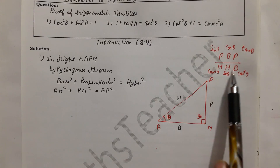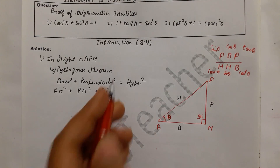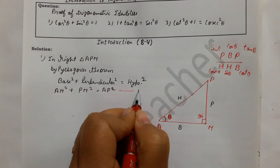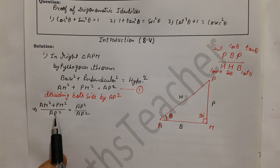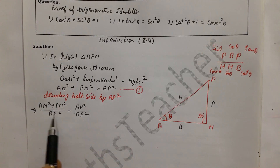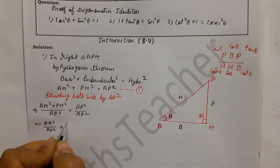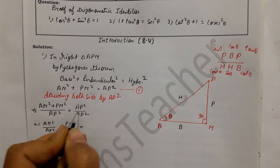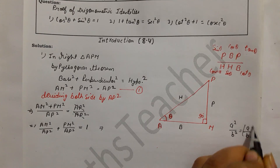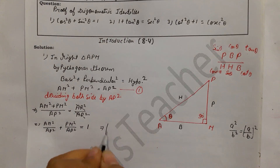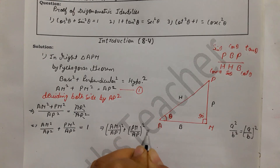Since sin θ = P/H and cos θ = B/H, we divide both sides by AP². Separating the terms: AM²/AP² + PM²/AP² = AP²/AP². The right side cancels to 1. Writing as squares of fractions: (AM/AP)² + (PM/AP)² = 1.